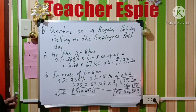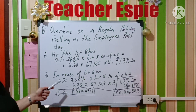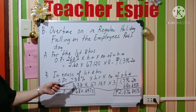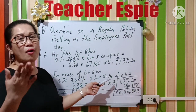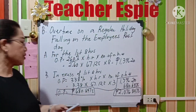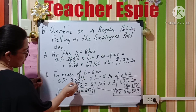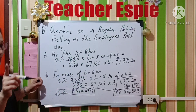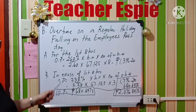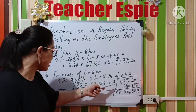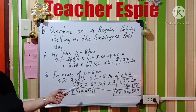Now for overtime beyond eight hours — for example three hours of overtime — the formula is: overtime pay equals 338% times hourly rate times number of overtime hours worked. Converting 338% to decimal gives 3.38. So that is 3.38 times 67.125 times 3 hours. Multiplying these three values gives you 680.6475 pesos for the three hours worked in excess of eight hours.